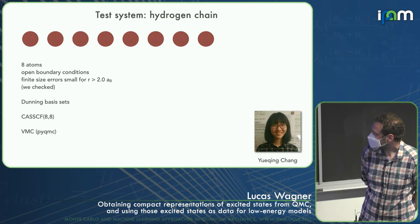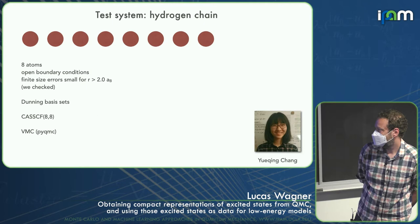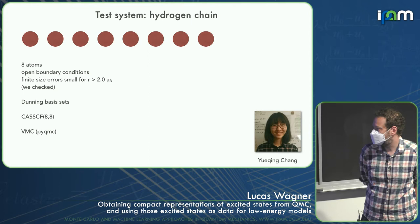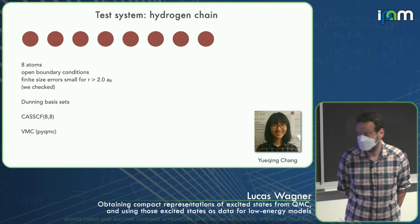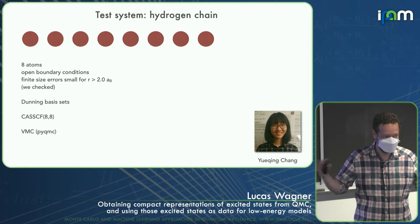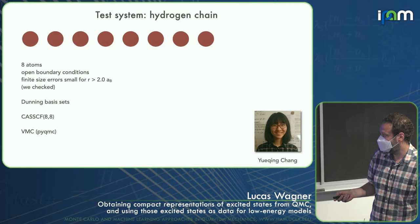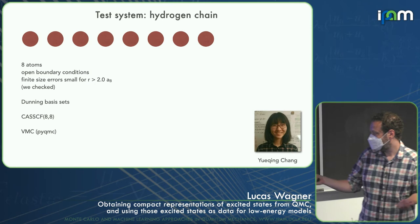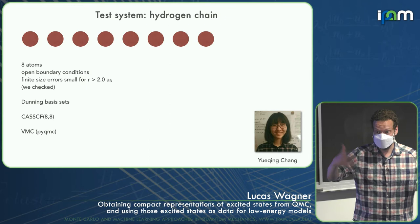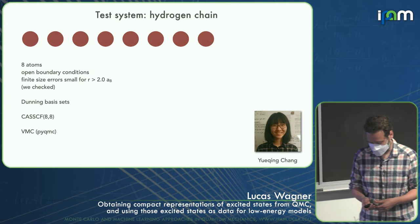Let's go back to the hydrogen chain. This is done by Yuching Cheng, a senior in my group who's about to graduate. She looks at R greater than 2 for the hydrogen chain with eight atoms. The finite size errors are pretty small at eight atoms for the larger separation; as soon as you hit 1.8 or so and get the metal, the finite size errors are huge. We use no pseudopotential, nothing. We're going to use two different ways of generating excited states: CASSCF with an 8-electron, 8-orbital active space, and variational Monte Carlo with a Jastrow.